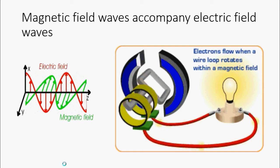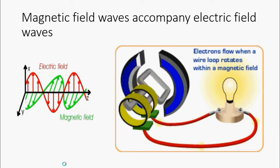Magnetic field waves accompany electric field waves. They are always perpendicular to the electric field waves and it is based on one of the basic concepts in electrical machines.